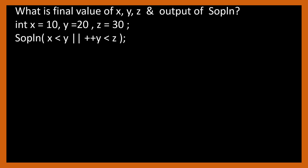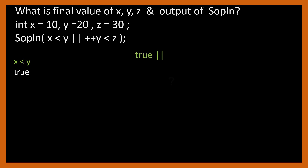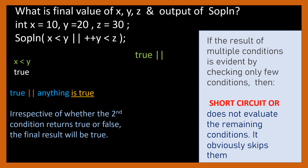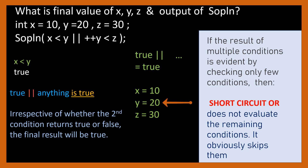Next question: can you guess the output? First condition is x less than y. Is 10 less than 20? Yes, it returns true. SOPLN looks like true short-circuit OR with something. Since OR evaluates to true if any one condition is true, the result is already evident. Short-circuit OR does not evaluate remaining conditions if the result is clear, so the second condition is not evaluated. The output is true, and since the second condition was never executed, y remains 20. Final values: x equals 10, z equals 30, y equals 20.